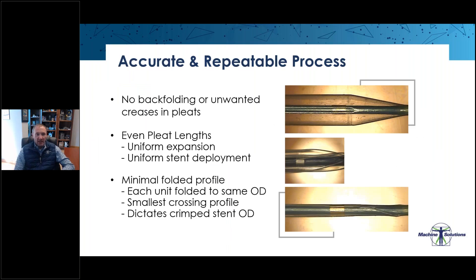What are we trying to gain out of this process? We need it to be accurate and repeatable. We do not want any back folding or unwanted creases in the pleats that could lead to a larger OD or a non-uniform expansion of the balloon. Those even pleats are going to provide us with uniform expansion if it's just a straight angioplasty procedure, or if there's a stent placed on top of that balloon, it is going to allow that stent to be deployed uniformly. The key outcome we want is that folded OD — the smallest possible crossing profile, unit after unit.